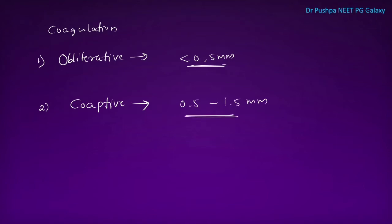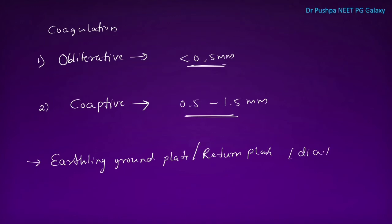In obliterative coagulation, we directly touch the bleeders with the cautery. In coagulative method, we catch the vessel with an artery forcep and apply current to the instrument. For monopolar cautery, a grounding plate — also called the return plate, diathermy plate, or diathermy pad — is required. This cautery plate should not be placed near scars or implant sites; it should be placed under a muscular, well-vascularized area like the buttocks, thigh, or back. Burn injury can develop if the plate is not properly in contact with the patient, if there are improper or broken connections, or if high voltage and high power settings are used.